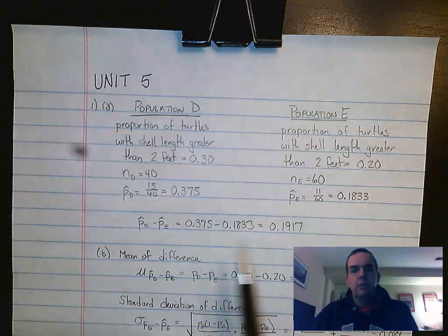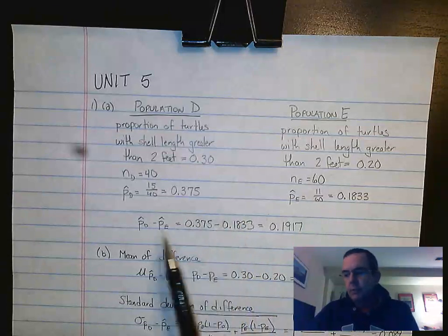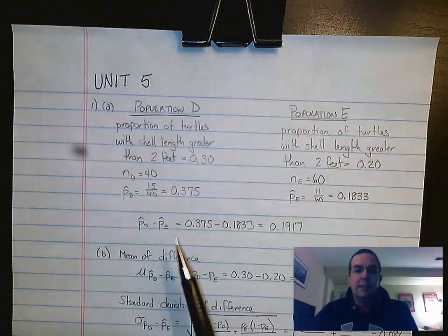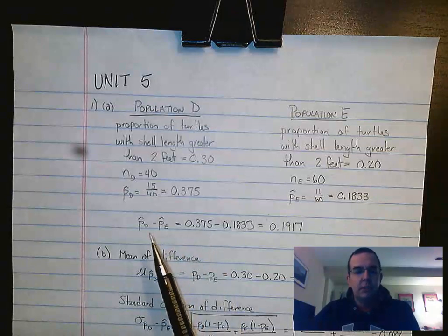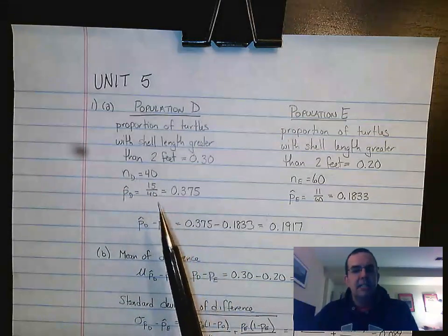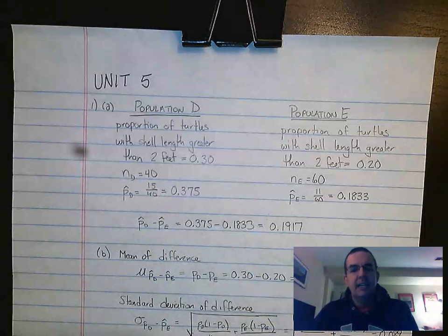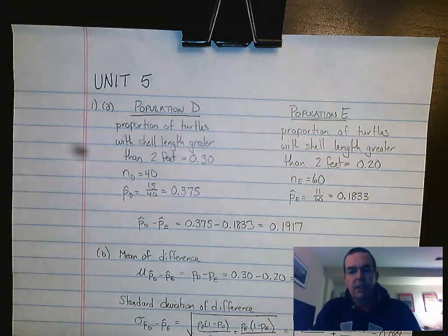Then it asks, what's the difference in proportions? We're allowed to subtract means, so literally what you do is you take that P-hat D minus the P-hat E. When you subtract, you get 0.1917.